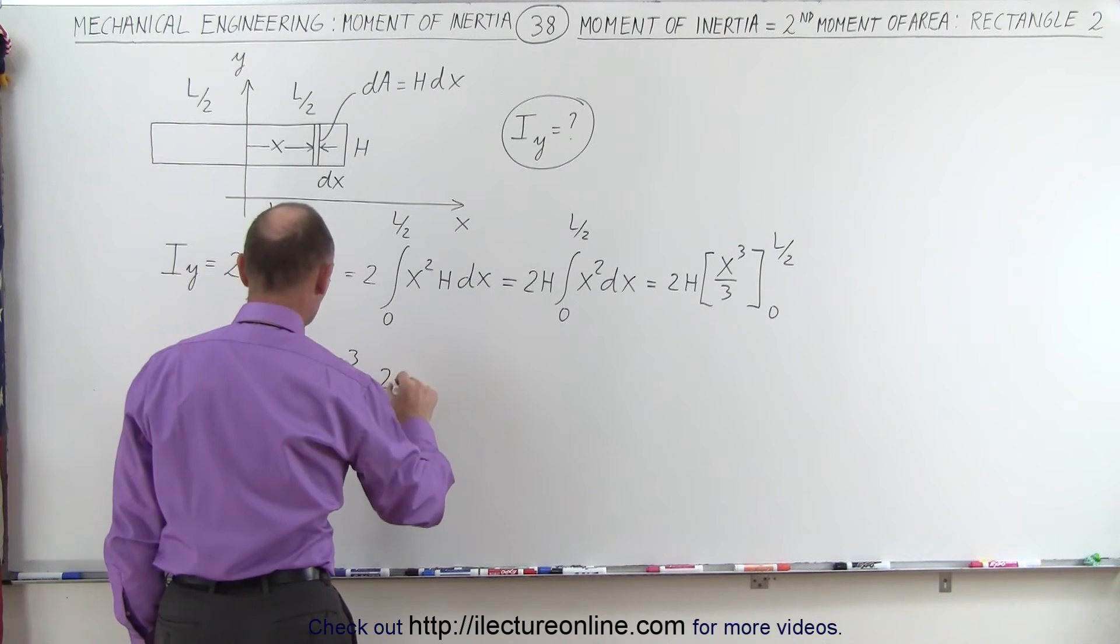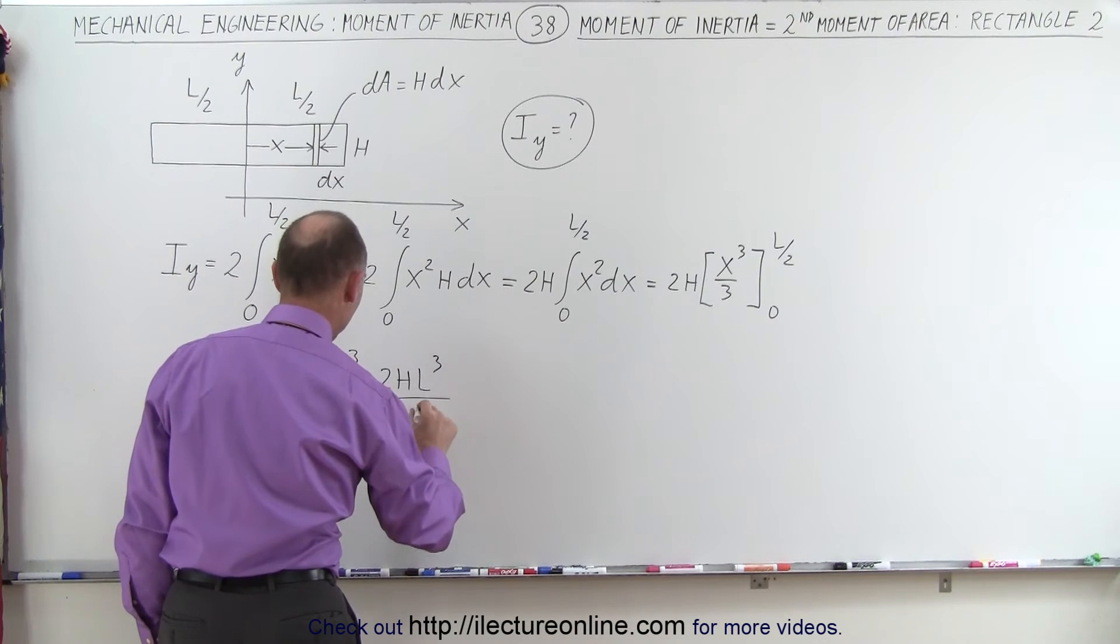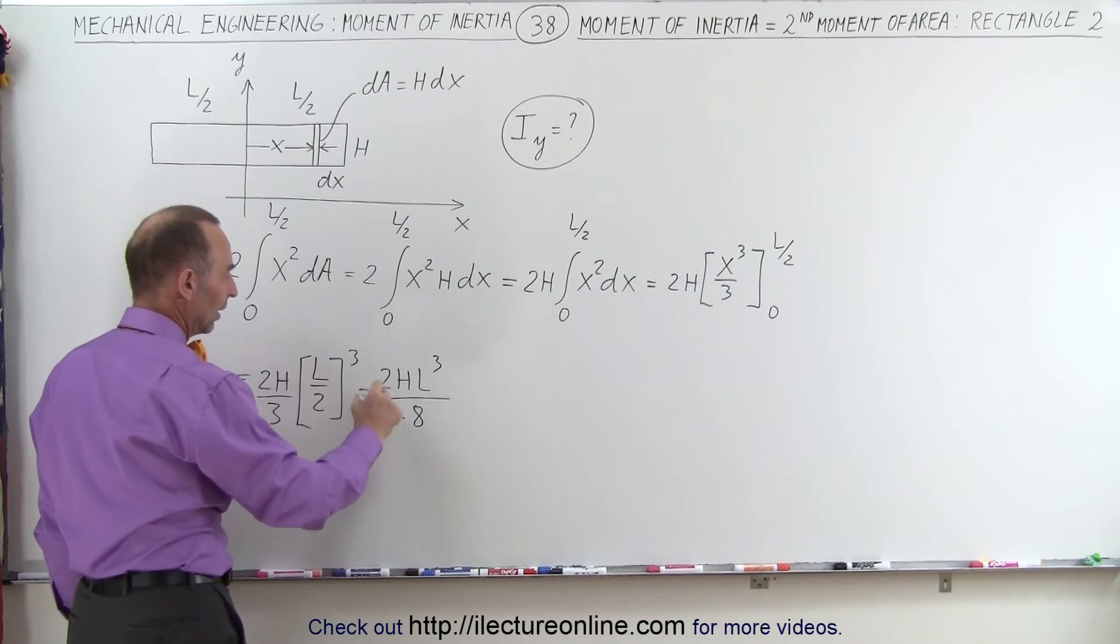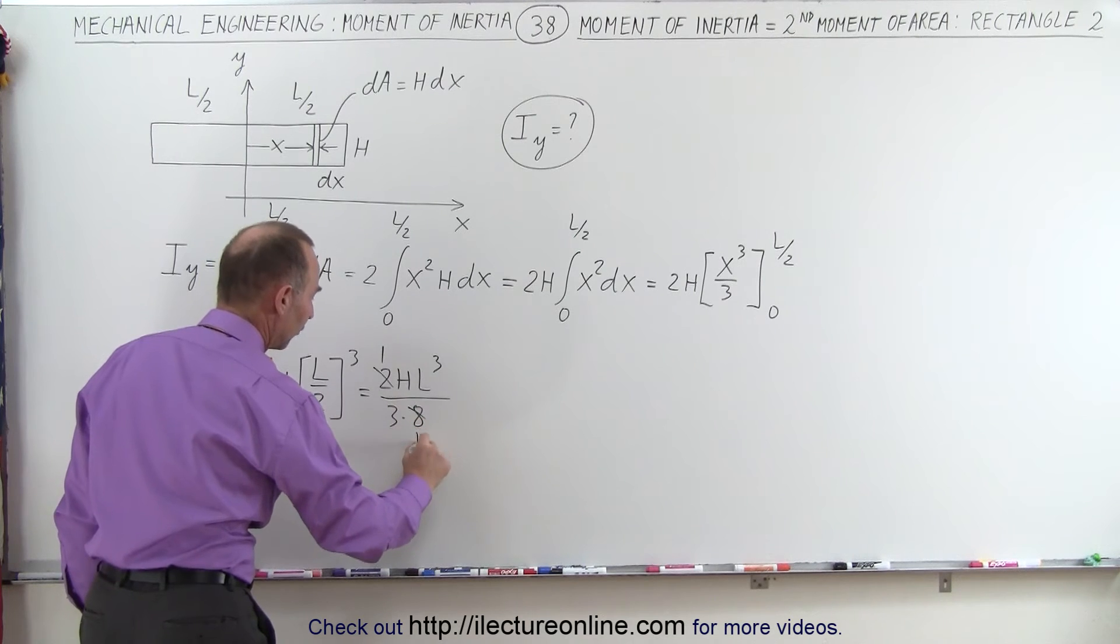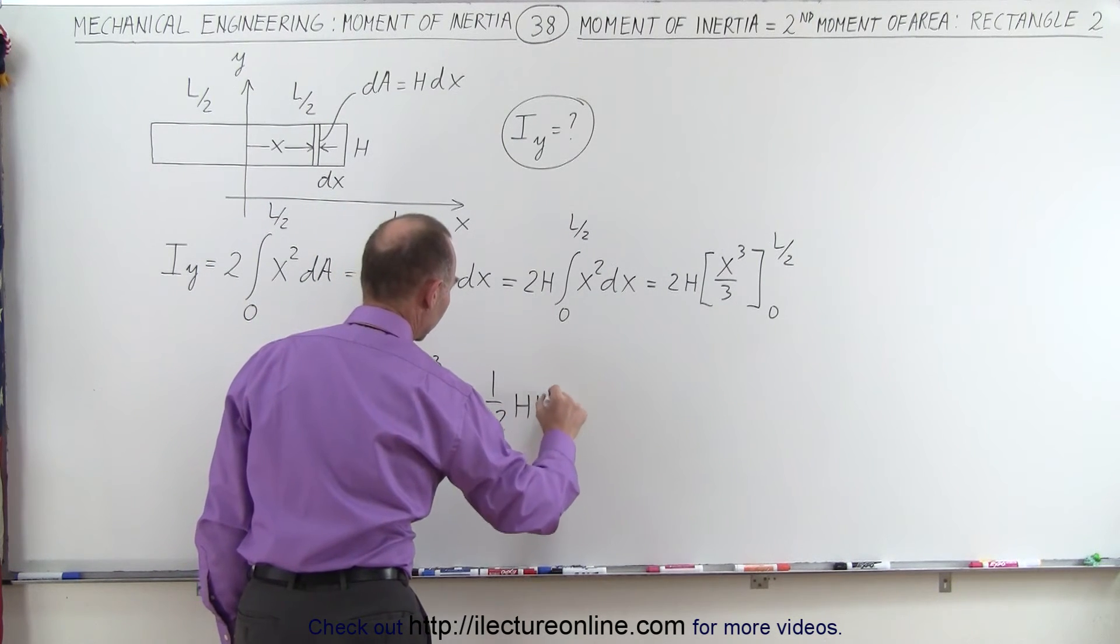which is equal to 2hL cubed divided by 3 times 8, because 2 cubed is 8, and so this becomes 1, this becomes 4, or 1/12th HL cubed.